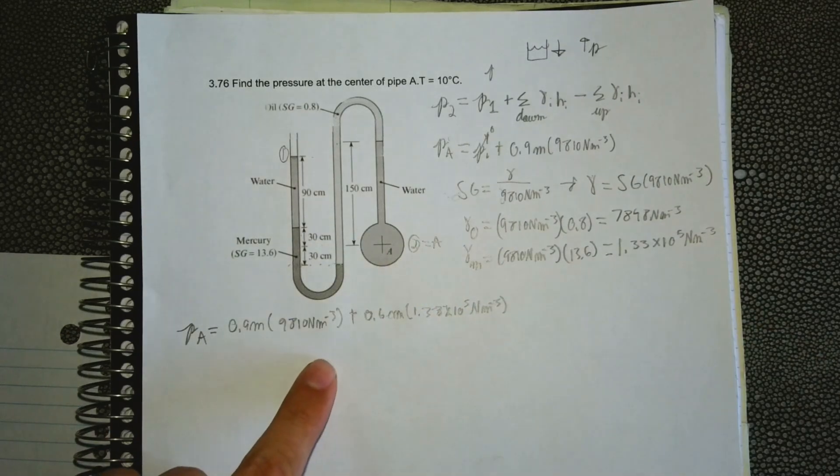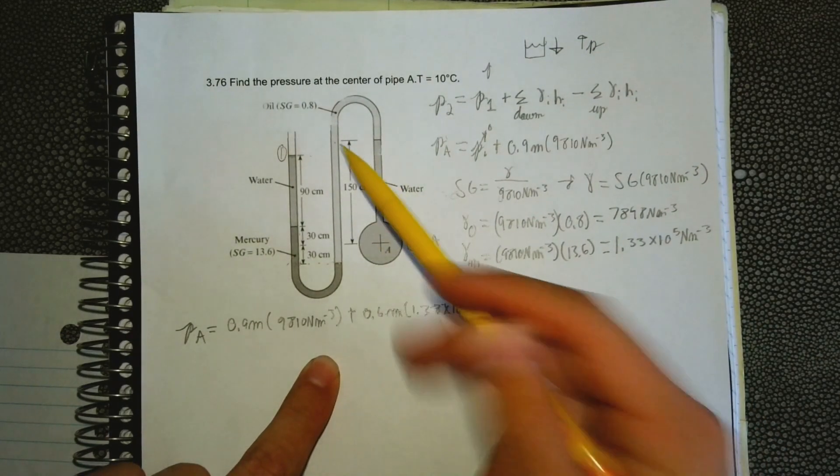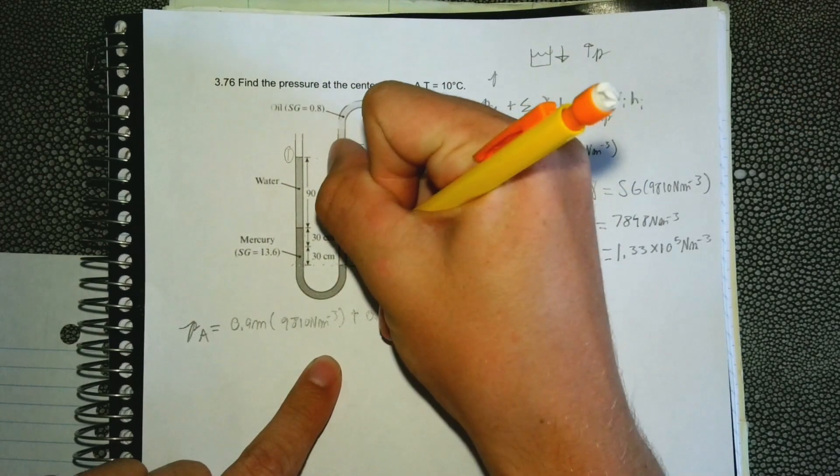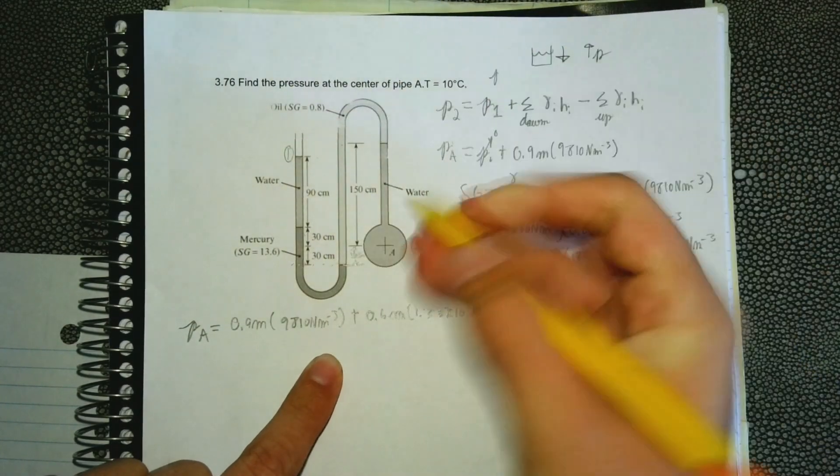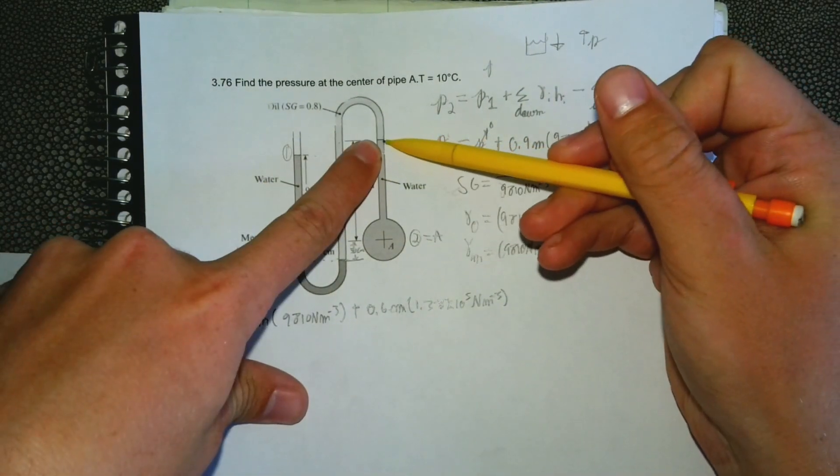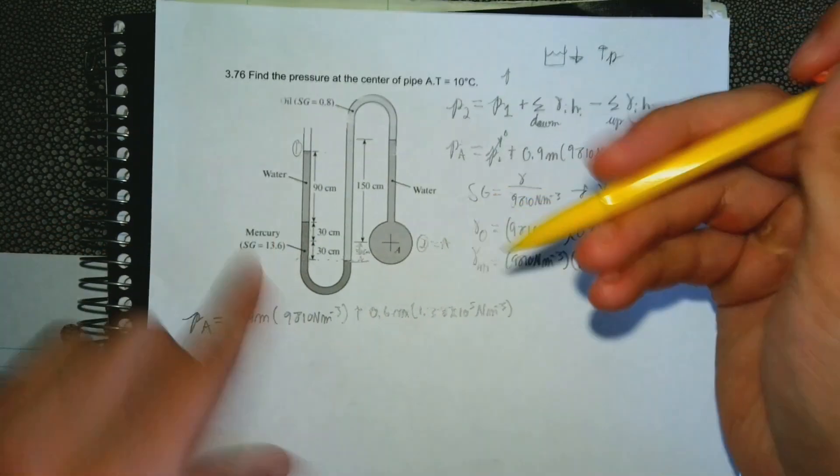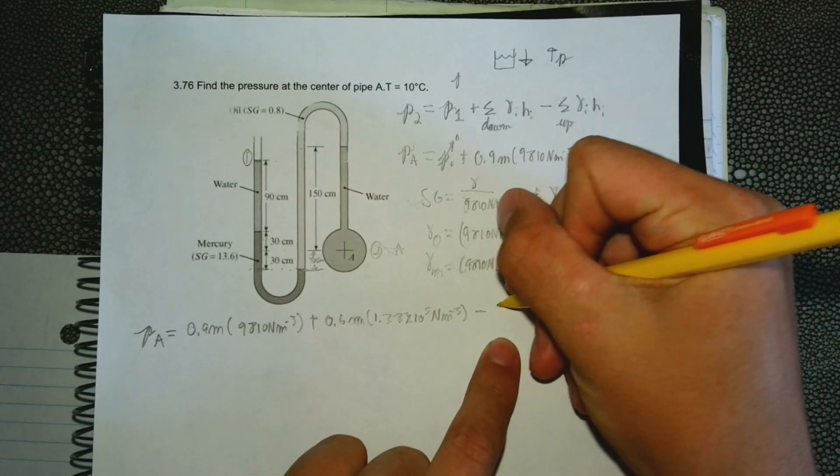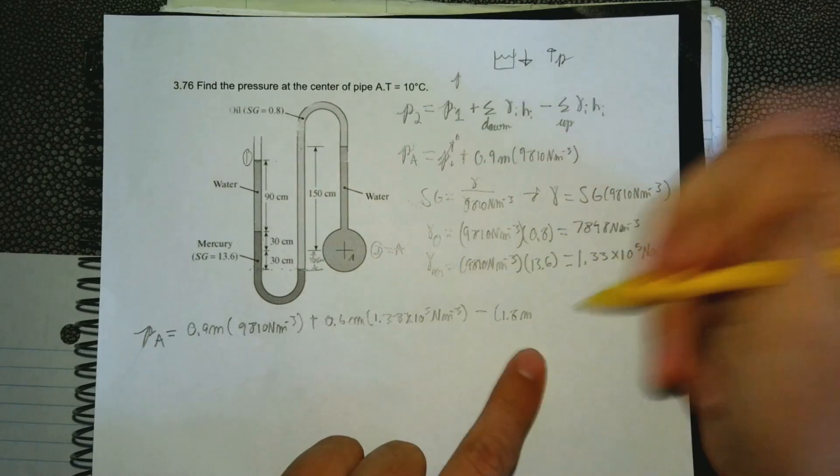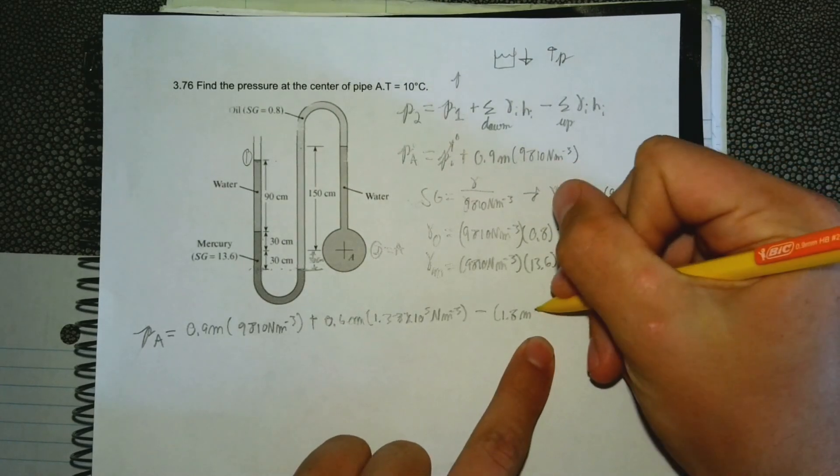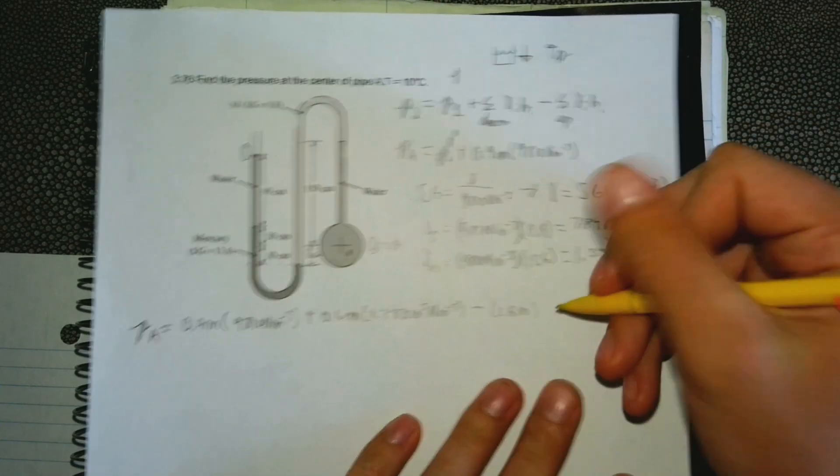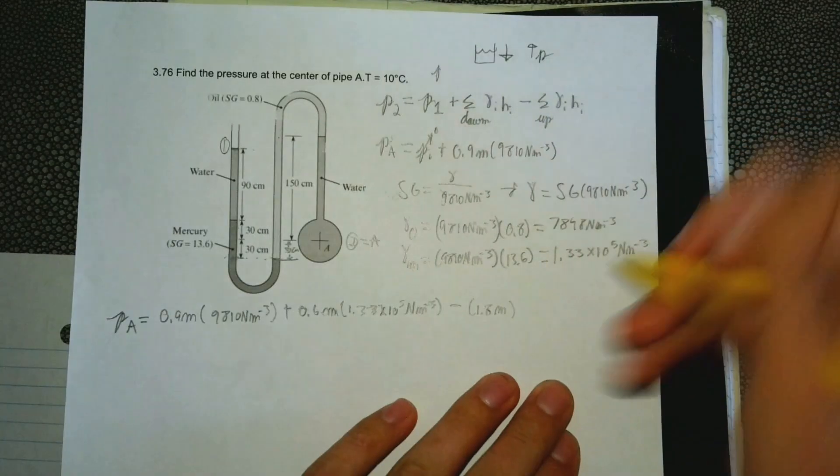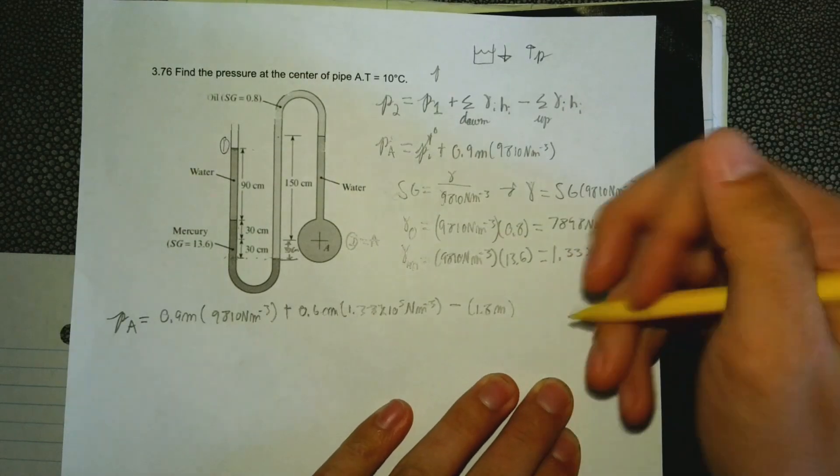Now we're going up. We have 30 centimeters, so we have 180 centimeters to go up to get to this point. So we're going to subtract because we're going up now, 1.8 meters, 180 centimeters, those are equivalent. I'm just doing meters so all these units will cancel out. Then the specific weight, we're in oil now. We found that is 7,848.